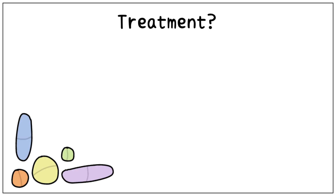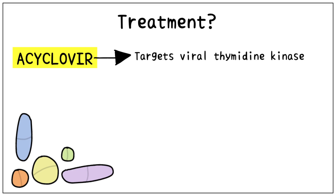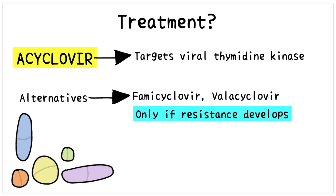For treatment of herpes, acyclovir is the drug of choice. It is only activated in cells with herpes infection and targets viral thymidine kinase, which helps the virus replicate. Hence, it has minimal side effects. Alternatives such as famciclovir and valacyclovir should be used only if resistance develops.